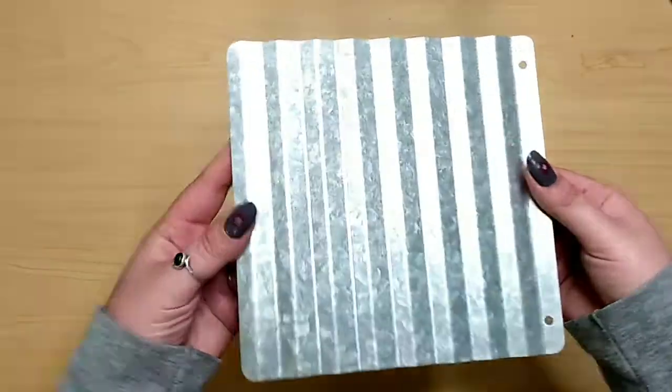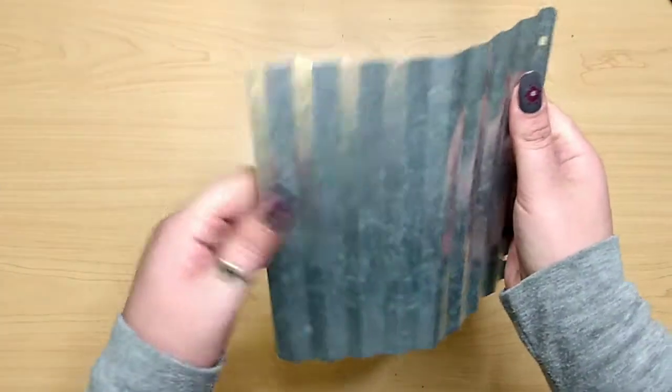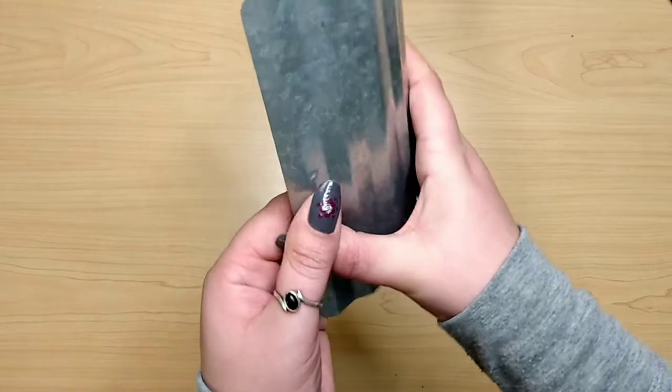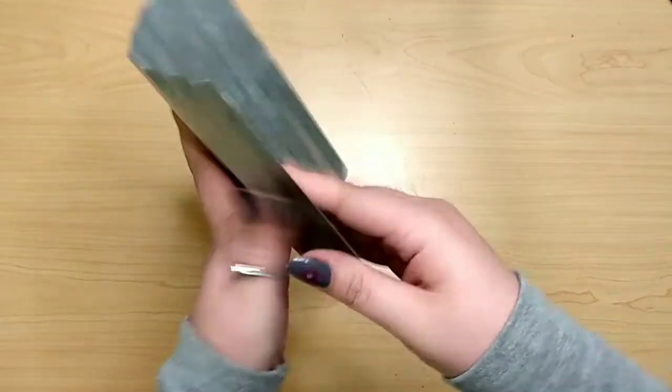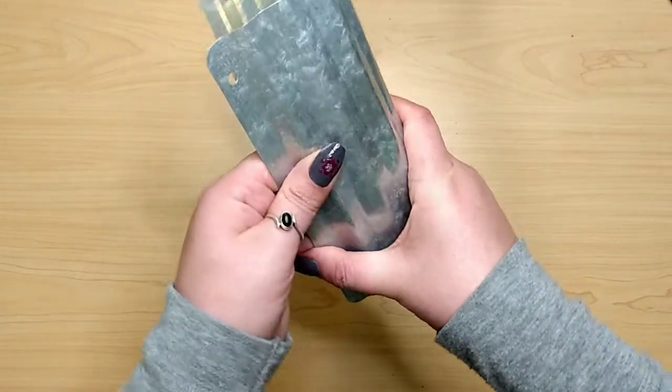Remove their jute hangers that they come with and we're going to start bending them. Now you want to bend them where the lines of the corrugation is vertical, but bend this very carefully. This is real time.